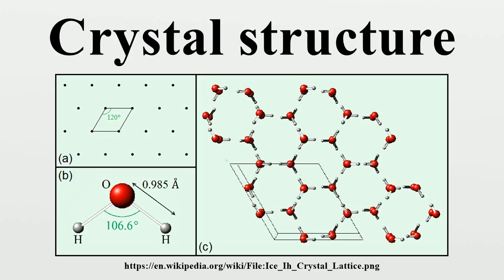Bravais lattices: When the crystal systems are combined with the various possible lattice centerings, we arrive at the Bravais lattices. They describe the geometric arrangement of the lattice points, and thereby the translational symmetry of the crystal. In three dimensions, there are 14 unique Bravais lattices that are distinct from one another in the translational symmetry they contain. All crystalline materials recognized until now fit in one of these arrangements.